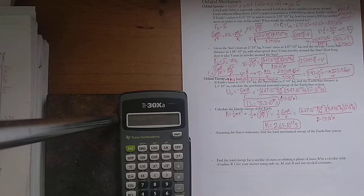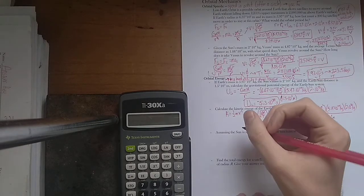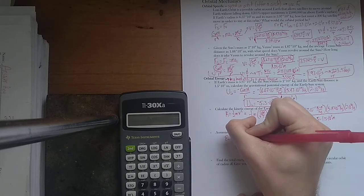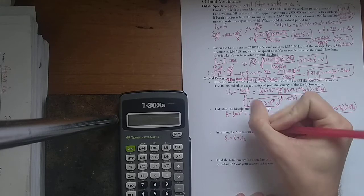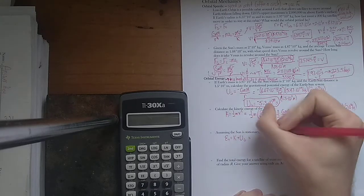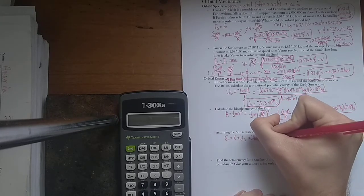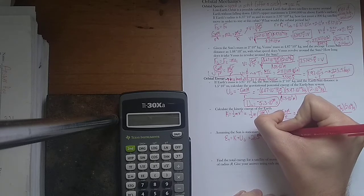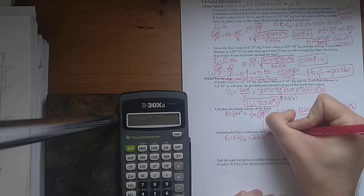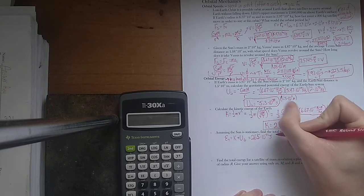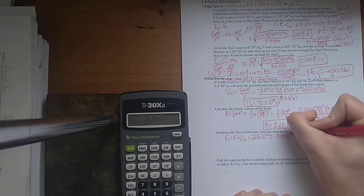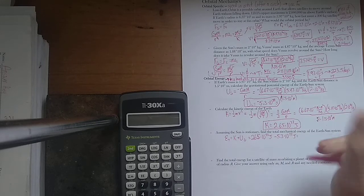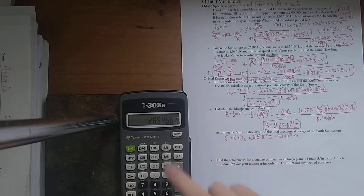So, assuming that the Sun is stationary, let's find the total mechanical energy of the Earth-Sun system. Well, the total energy would be given by the kinetic energy plus the gravitational potential energy. Kinetic energy is 2.65 times 10 to the 33rd joules, plus, but it's negative, so we're just going to write minus 5.3 times 10 to the 33rd joules. And watch what happens if I combine those two.